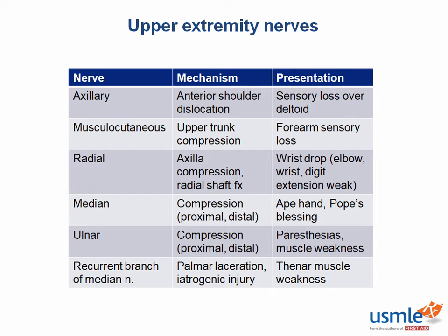Let's finish with a high-yield table. First, the axillary nerve. Always keep the axillary nerve in mind when presented with a patient who sustained an anterior shoulder dislocation. Proximal humerus fractures can also lead to axillary nerve dysfunction. A common exam presentation is a patient who recently sustained a shoulder injury and now complains of numbness over the lateral aspect of their shoulder — hinting at an anterior shoulder dislocation that was reduced, but with residual numbness secondary to axillary nerve neuropraxia.